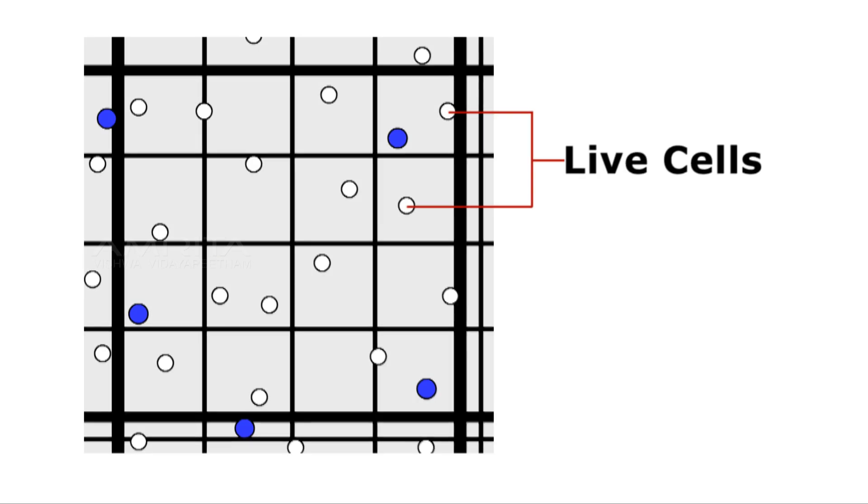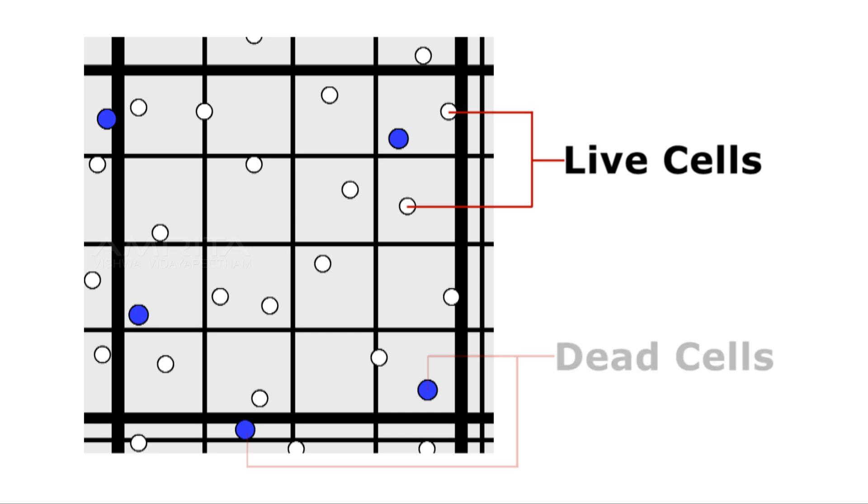Live cells appear colorless and bright or refractile under phase contrast while the dead cells stain blue and are non-refractile. Keep a separate count of viable and non-viable cells.